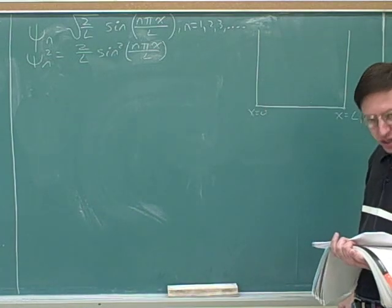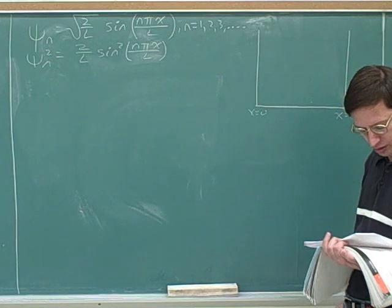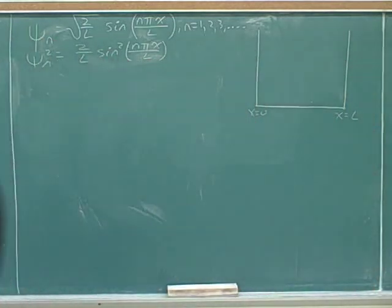Now what was the question for part A? What is the probability that it is between x equals zero and x equals L? So what's the mathematical expression you have to write down to calculate that probability? Let's try writing down just in very general terms.